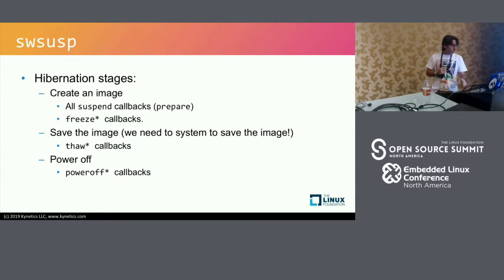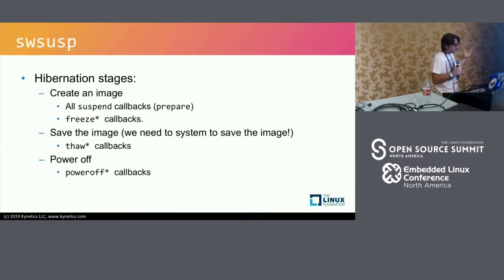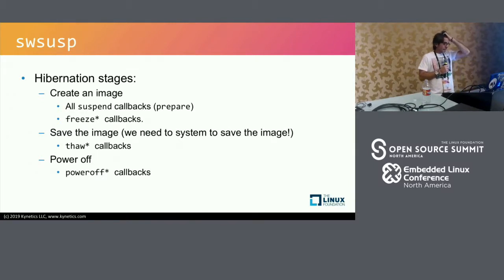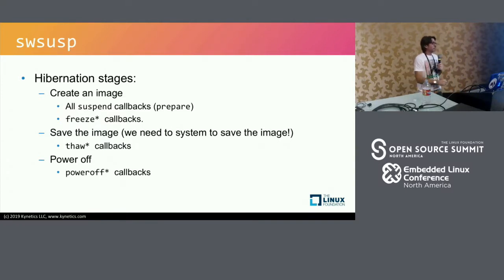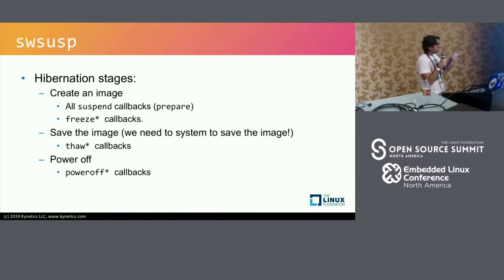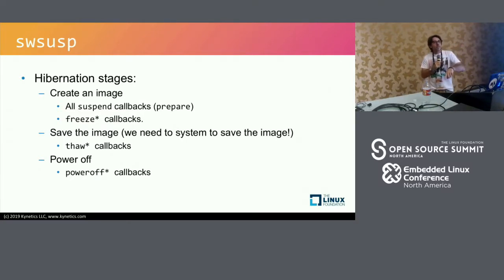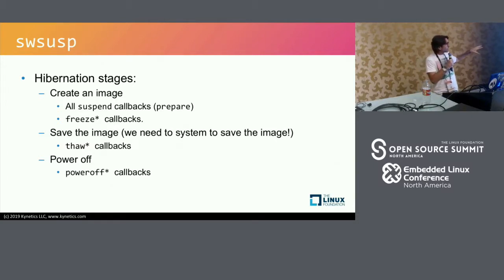We are using software suspend, a kernel power management feature available since kernel 3.8 — now the default framework. There are different stages in the hibernation flow: first, you prepare and create an image, then freeze callbacks stop the system; then you need to save the image, so you de-freeze the system again to write it — you can't write while in deep sleep state. Then you call power off.